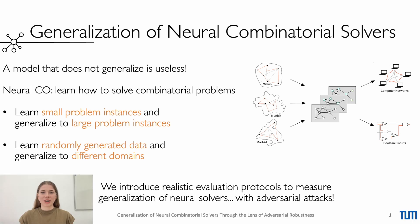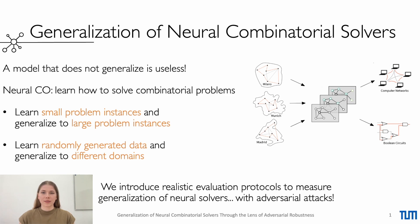Researchers want to build models that generalize, and the field of neural combinatorial optimization is no different. In this field, you want to learn how to solve combinatorial optimization problems — for example, predicting the optimal route over a given graph. Neural combinatorial solvers that could generalize to larger problem instances or across domains would have a big advantage over traditional solvers with long runtimes and application-specific heuristics.